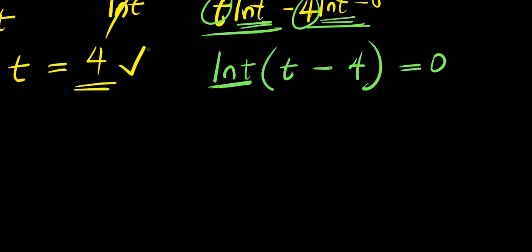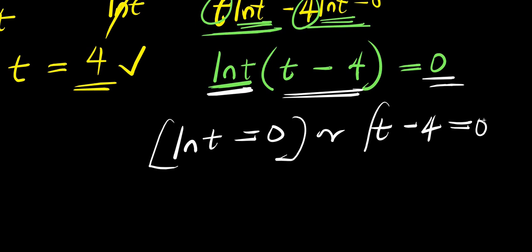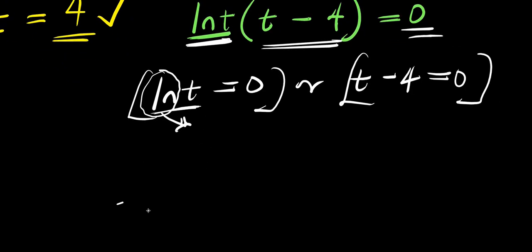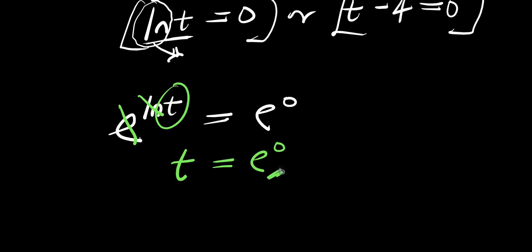So if you observe now, you are going to equate each factor to 0. You have ln t equals 0, or t minus 4 equals 0. We are going to solve these individual equations. To solve ln t equals 0, you eliminate the natural log by raising e to both sides: e to the power of ln t equals e to the power of 0. The e and ln cancel, leaving t equals e to the power of 0, and any number raised to the power of 0 is 1. So you have t equals 1. This is another solution to this particular problem.